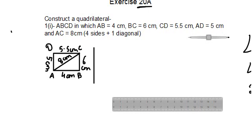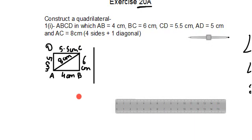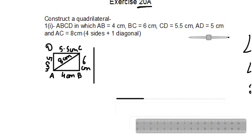First of all we will begin by drawing AB, which is 4 cm. Using your ruler, keep it at zero and draw the line up to 4 cm. Now mark the endpoints as A and B. This is AB of four centimeters.